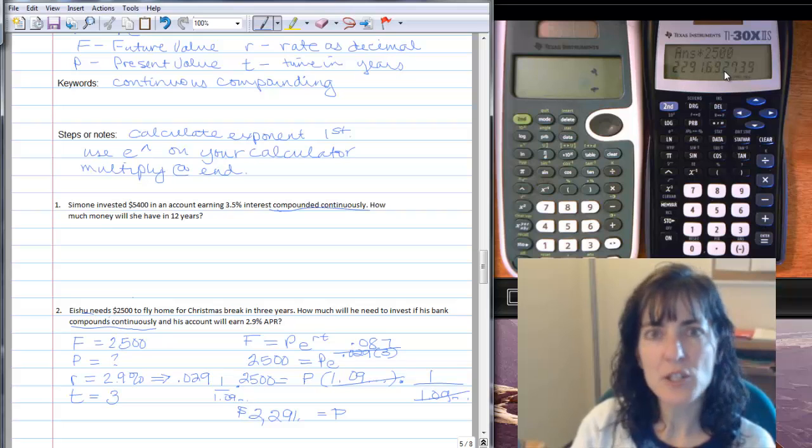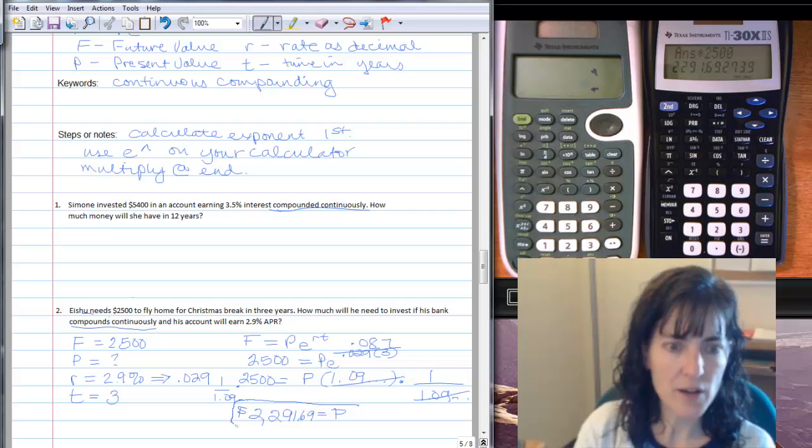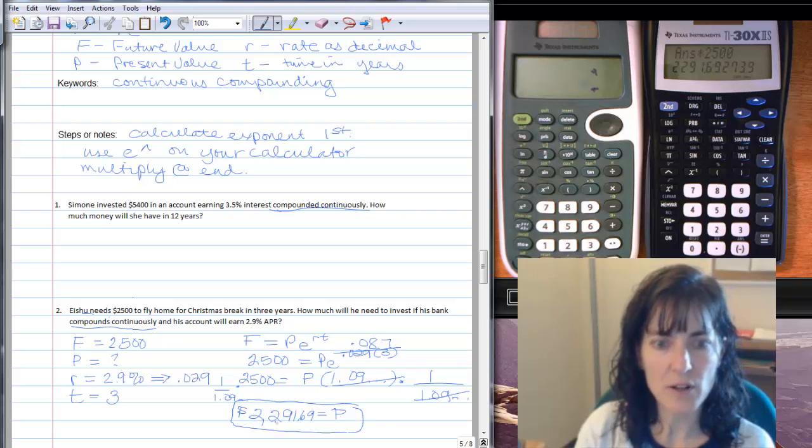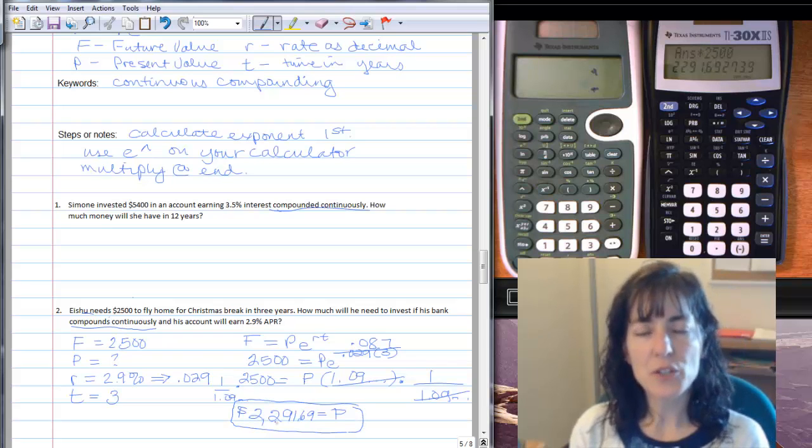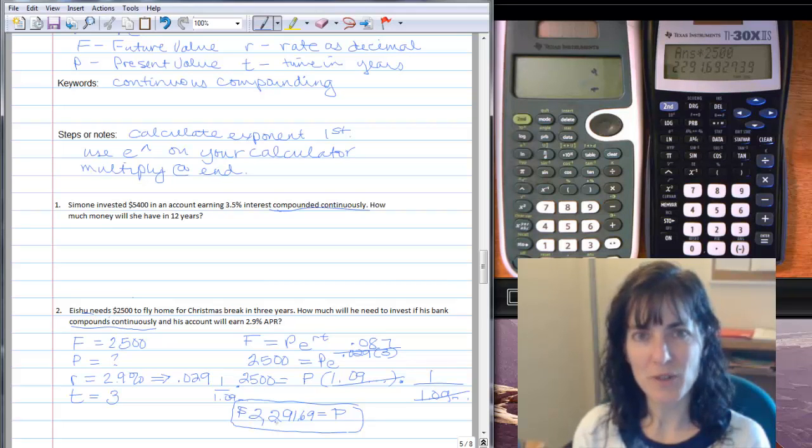And then I end up down here with my dollar value that Eshoo has to start with $2,291.69. And since my next digit is a 2, I can leave it as 69 cents. So Eshoo needs $2,291.69 to invest in an account that compounds continuously for three years so that he can have $2,500 to fly home at Christmas.